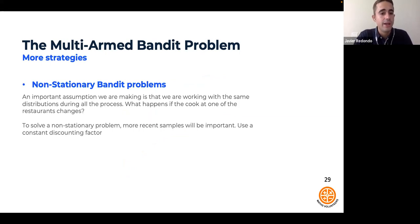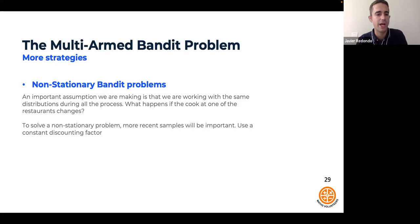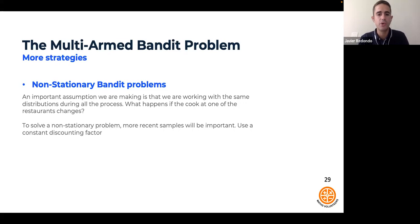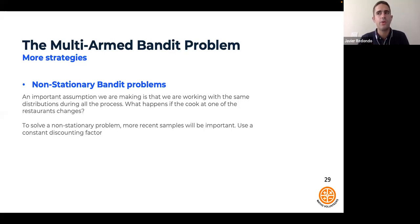It's also important to mention non-stationary bandit problems. In our standard formulation, we assume distributions remain fixed throughout the process. But what if the cook at a restaurant changes? Then the distribution shifts. In non-stationary bandit problems, we must pay more attention to recent samples, which requires using a constant decay factor rather than relying purely on all historical information. This is an important extension for real-world scenarios where the environment changes over time.